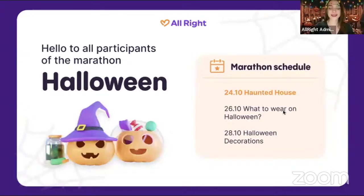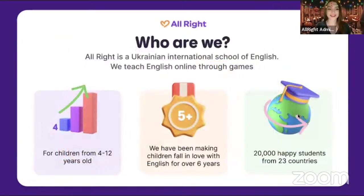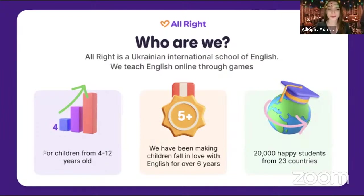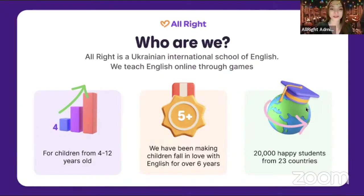I hope all of you are our students, but if you are not, let me tell you about the school. All Right is a Ukrainian international school of English for all kids from four to twelve. Tell me, how old are you? We have been making children fall in love with English for over six years, and we now have 20,000 happy students from 23 countries all around the world.